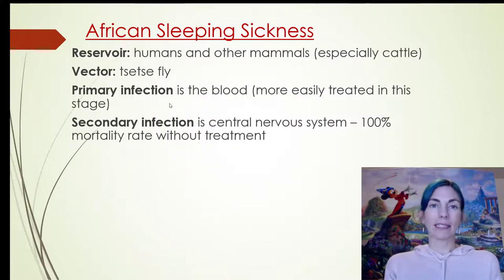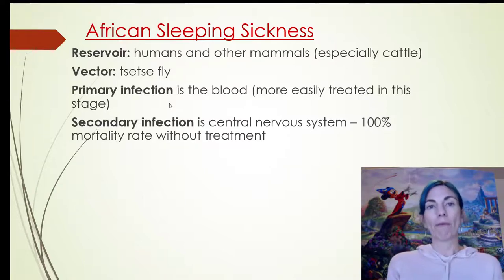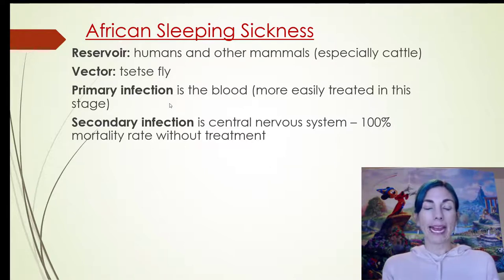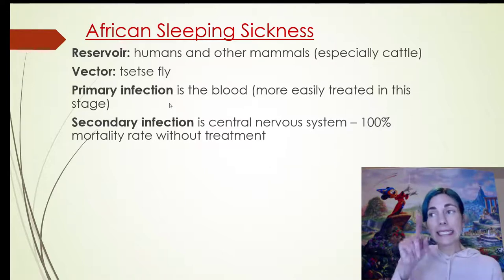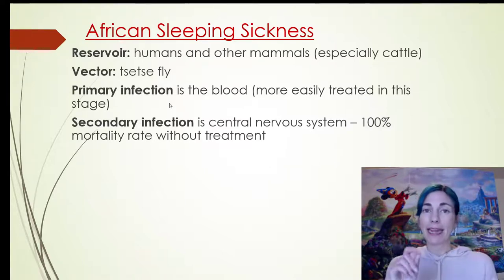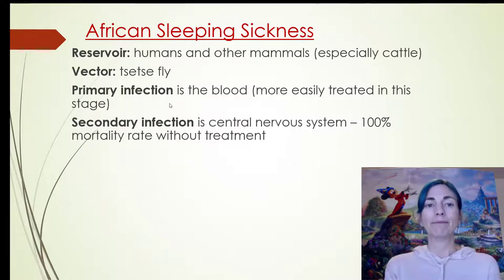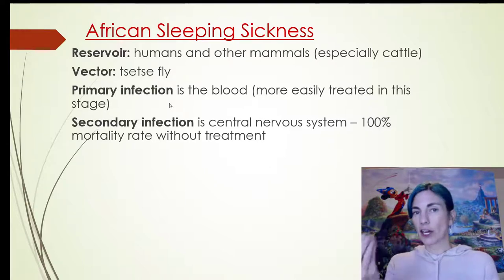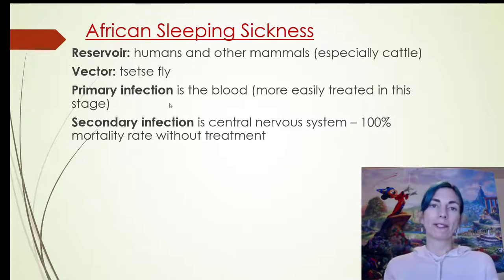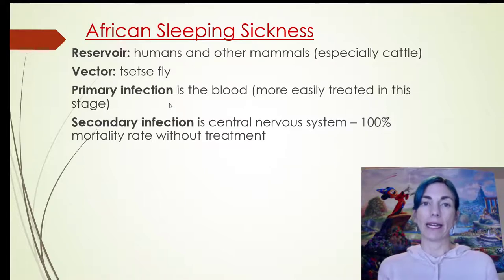African sleeping sickness is caused by Trypanosoma brucei. The reservoir is humans and other mammals — cattle seem to be one of the more prominent mammalian reservoirs. The vector is a biting insect known as the tsetse fly, which bites somebody, draws up infected blood, carries it to somebody else, and drops the parasite into their blood when it bites. That is largely how it is transmitted.